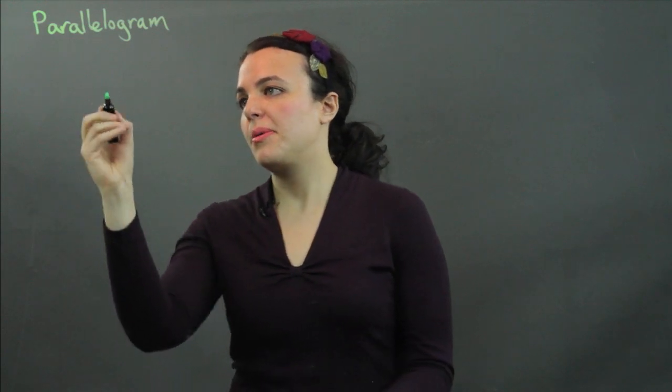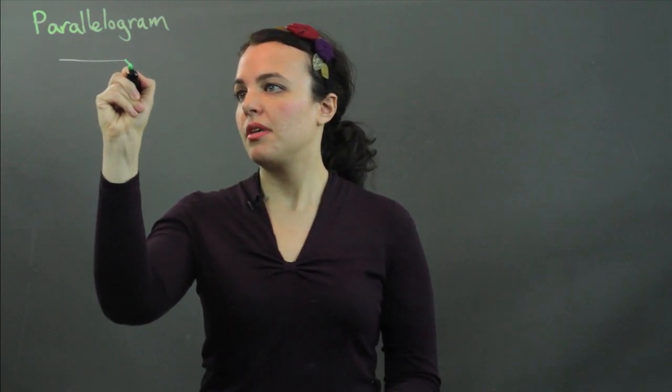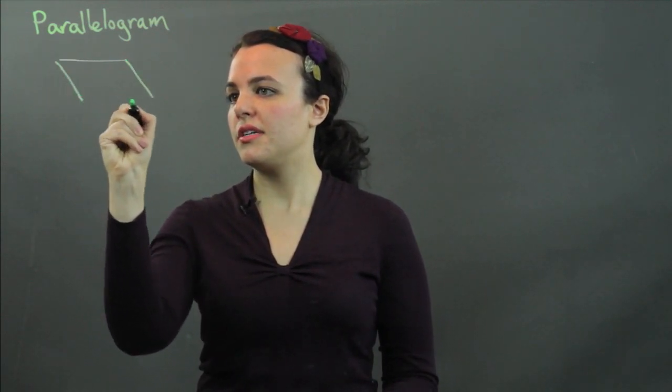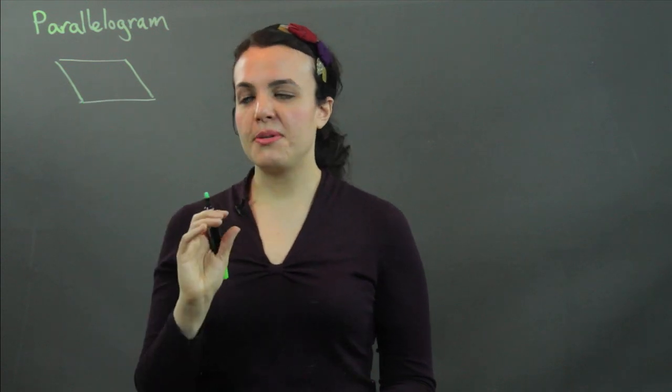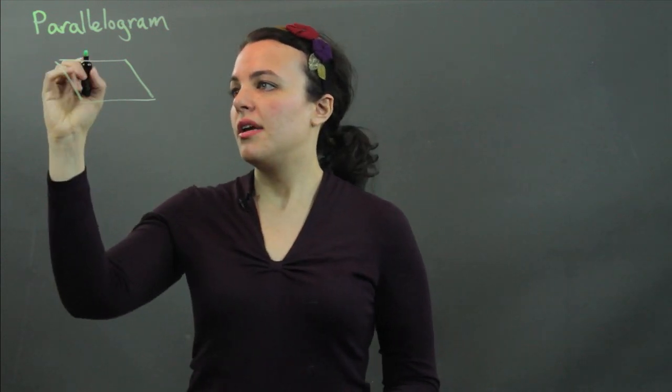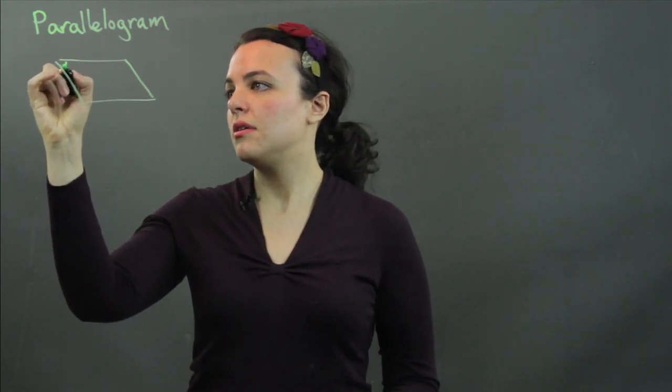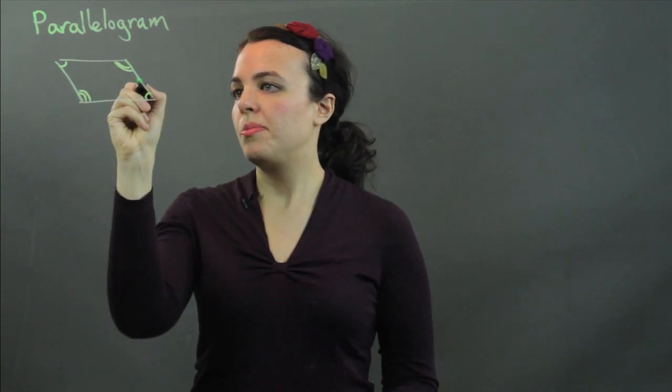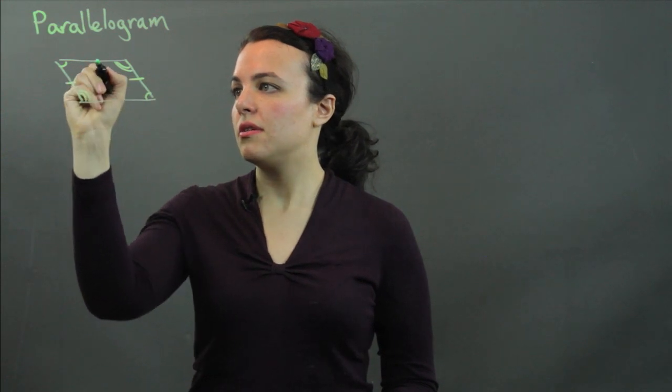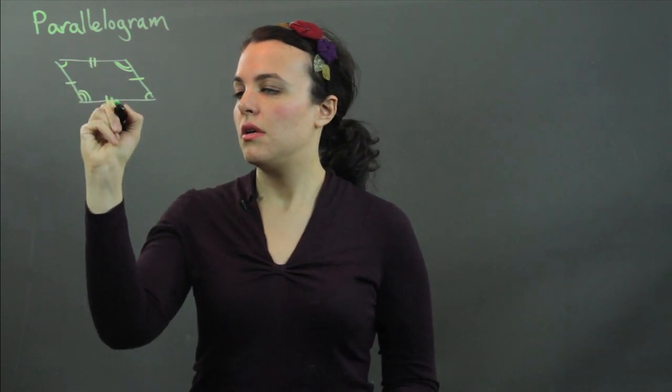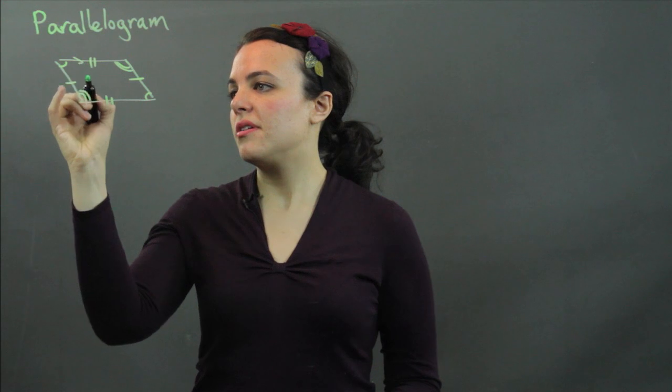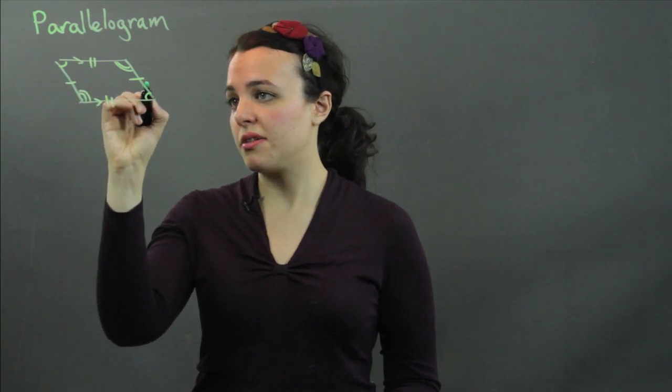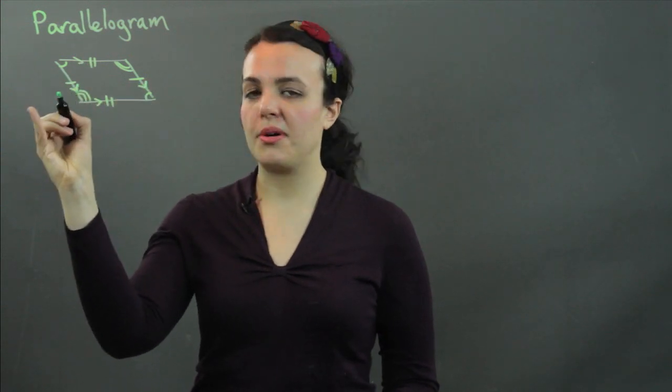A parallelogram is a quadrilateral, four sides, but a very specific one. It has two pairs of congruent angles, two pairs of congruent sides, and two pairs of parallel sides. That's why it's called a parallelogram.